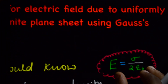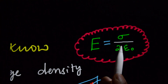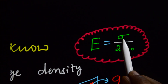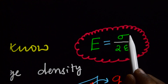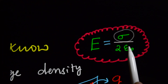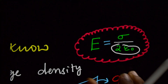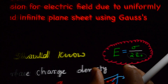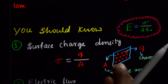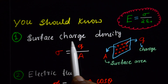We are going to derive the expression for electric field due to an infinite plane sheet. The result is: E equals sigma — surface charge density — divided by 2 times epsilon naught. We are going to take this derivation using surface charge density.